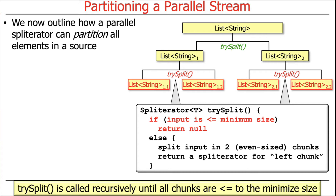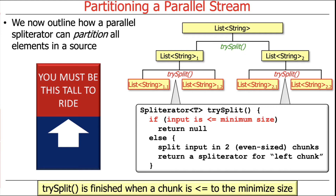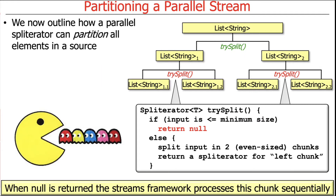For an ArrayList, for example, it'll split until each chunk has one element. That said, it doesn't have to do it that way — you could write your own spliterator that took it down to size five, or whatever you think the unit of atomicity should be. This keeps recursing until it reaches something considered atomic. When trySplit returns null, that's a signal to the streams framework that splitting is done. At that point, whatever elements remain are processed sequentially by calling tryAdvance.